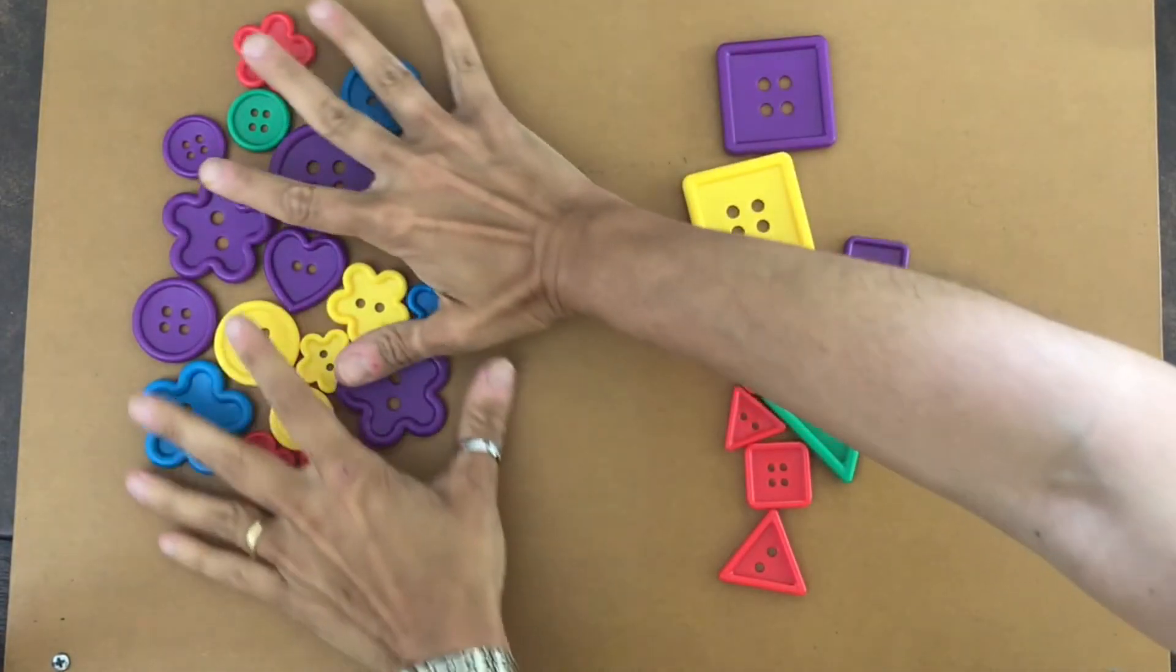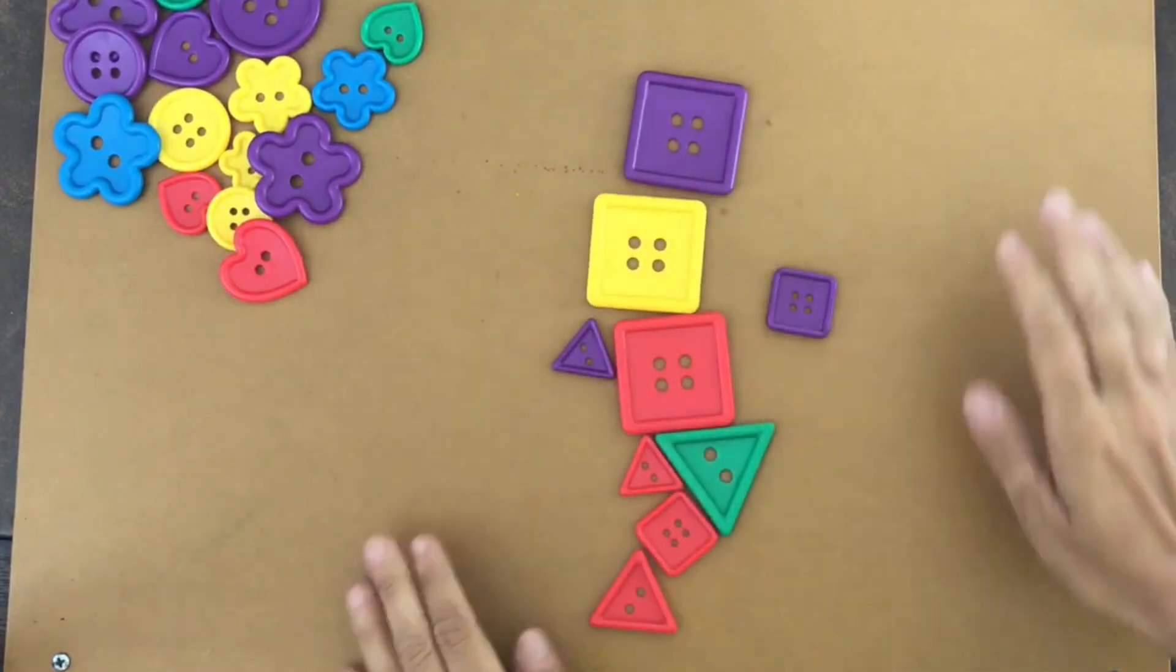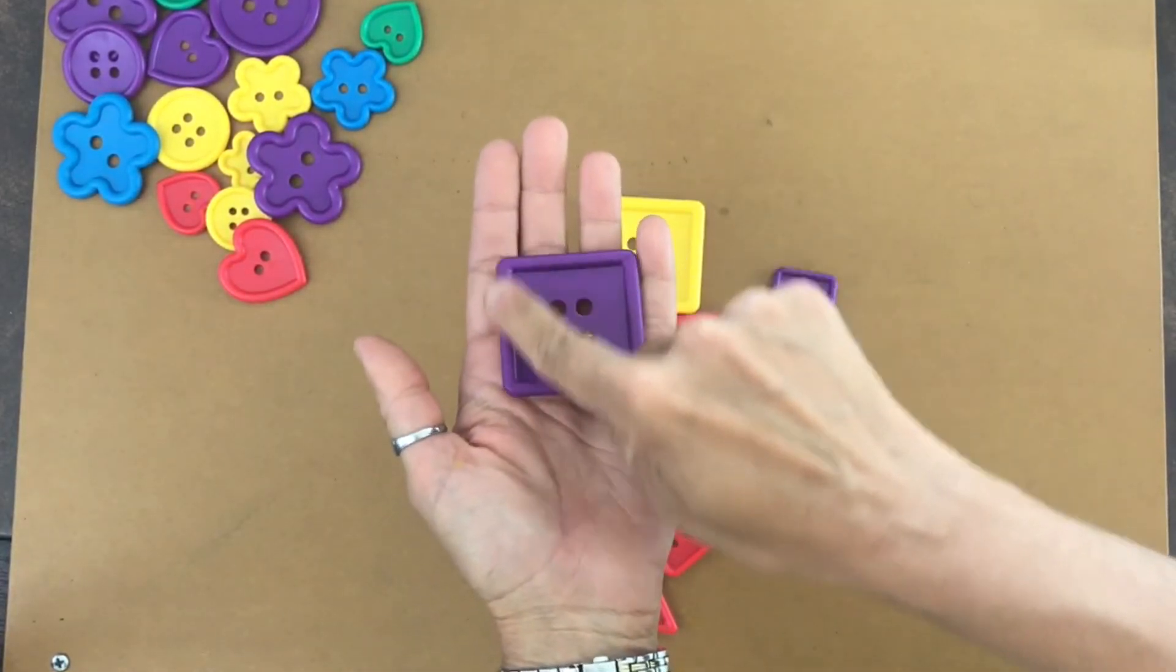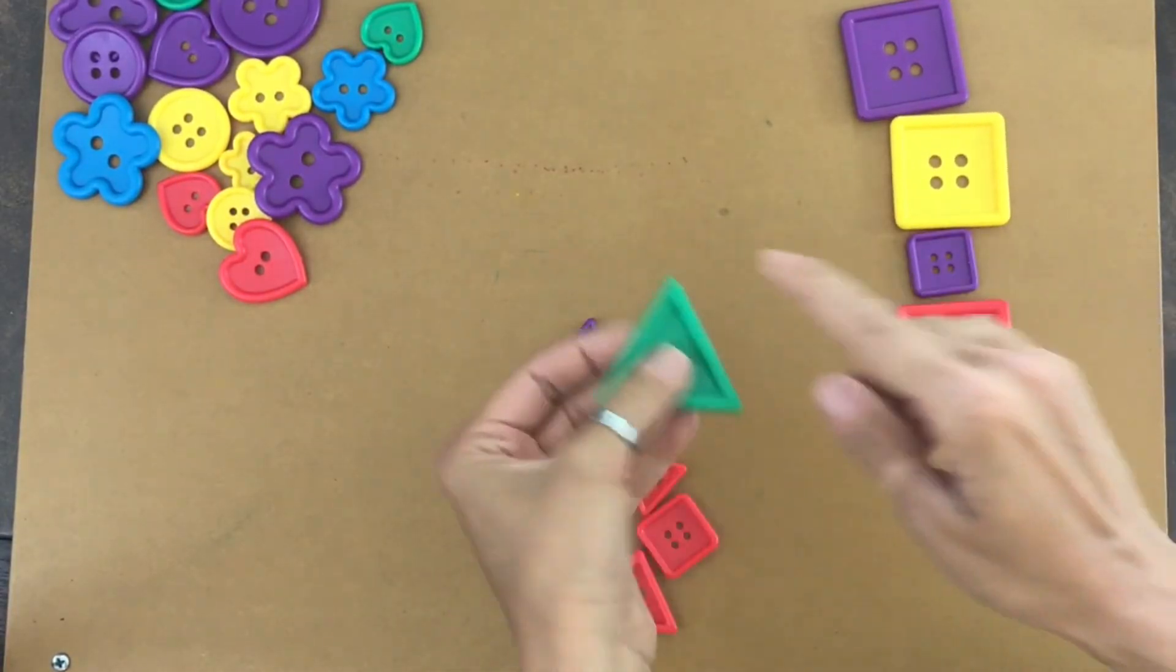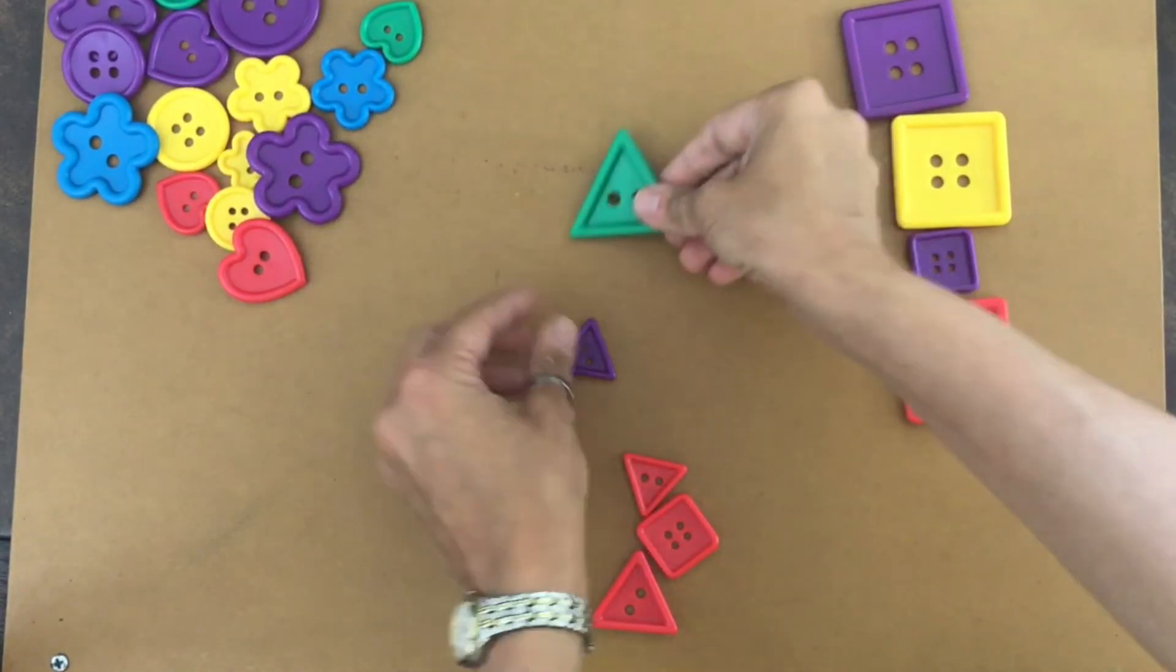So these have one, two, three, four, so four sides we'll put them here. And these have one, two, three sides, we'll put those here. So three sides versus four sides.